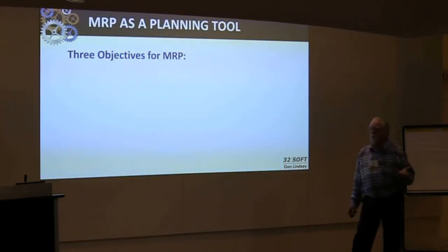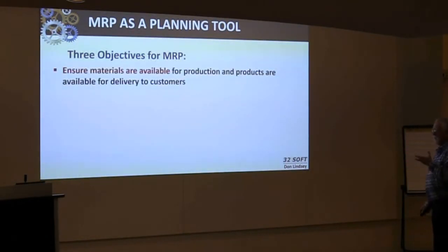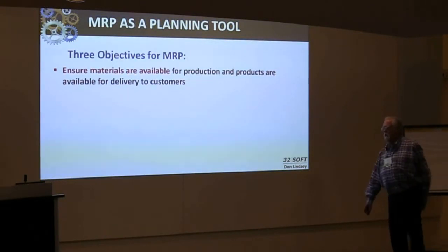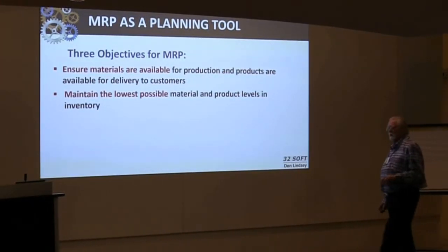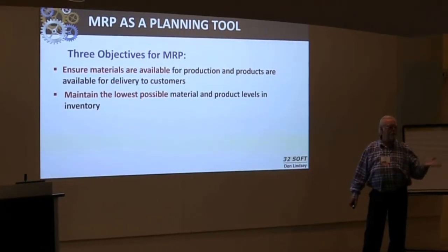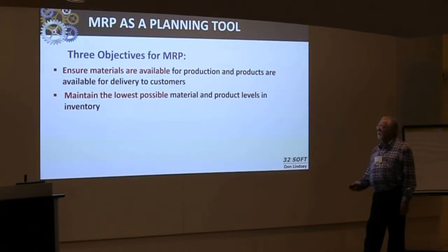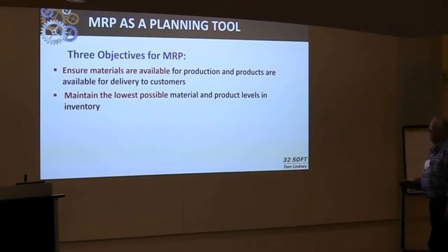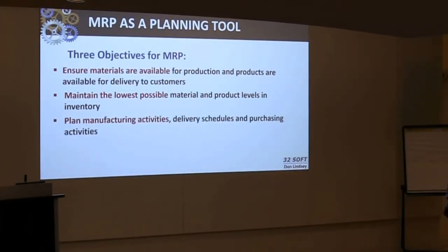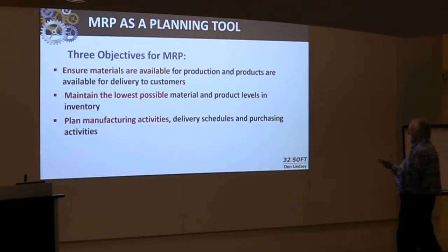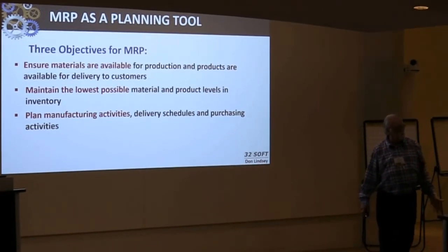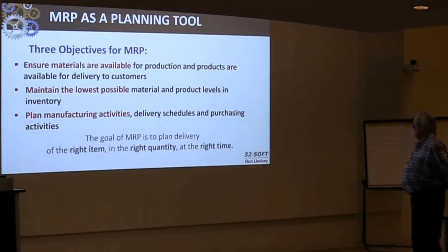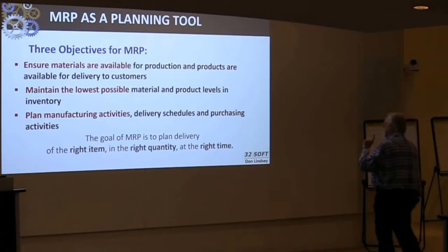There are three basic objectives for MRP. First, it's an attempt to ensure that material is available to make what you plan to produce. Second, if you have the proper data in your MRP planning elements in 1.4.7, it allows you to maintain the lowest possible inventory. Third, it's a priority planning tool — not only a material scheduling tool, but it allows you to plan manufacturing activities, calculate when you need to start work orders, and when you need to place purchase orders.